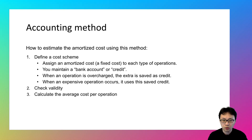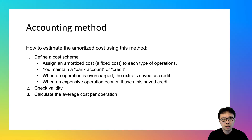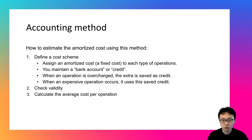If the fixed cost is smaller than the actual cost, that means the operation is very costly, so you will need to use the saved credits to compensate the deficit. As you can see, the cost scheme you design is very important for everything that follows.